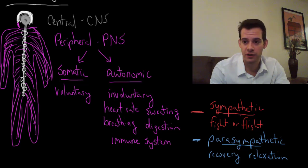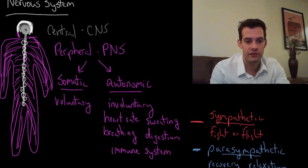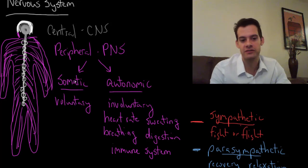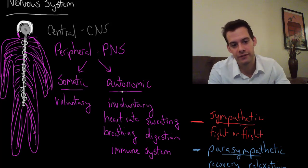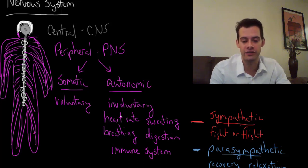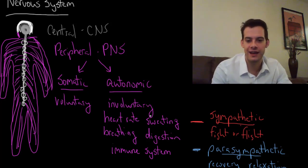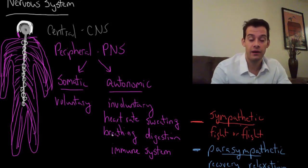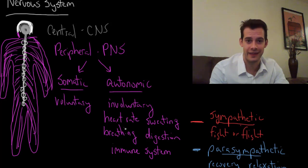So that's the general structure of the nervous system. We have the central nervous system, which is the brain and spinal cord. Then the peripheral nervous system, which is everything else. That can be divided into voluntary processes, which are somatic, and involuntary processes, which are part of the autonomic division. The autonomic division can be activated either sympathetically—this fight-or-flight response—or parasympathetically, with this relaxation and recovery response. I hope this was helpful. If so, please like the video and subscribe to the channel for more. Thanks for watching.